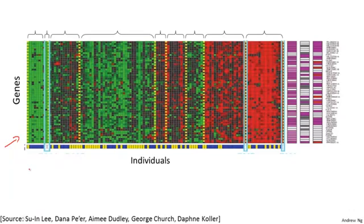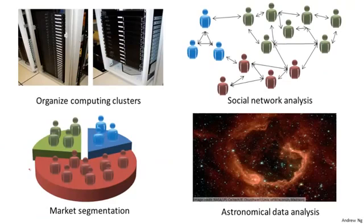Unsupervised learning or clustering is used for a bunch of other applications. It's used to organize large computer clusters. I had some friends looking at large data centers, that is, large computer clusters, and trying to figure out which machines tend to work together. And if you can put those machines together, you can make your data center work more efficiently. Here's a second application, social network analysis. So, given knowledge about which friends you email the most, or given your Facebook friends, or your Google Plus circles, can we automatically identify which are cohesive groups of friends, or which are groups of people that all know each other?